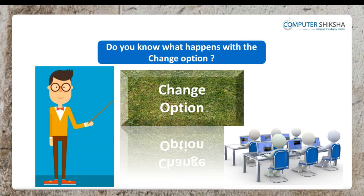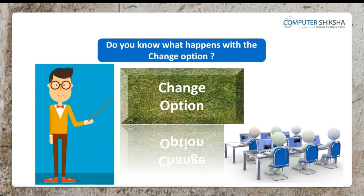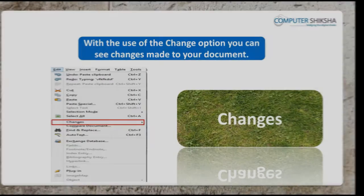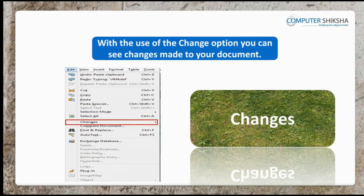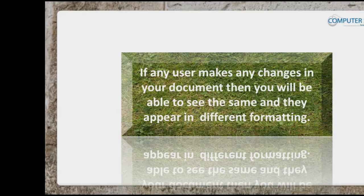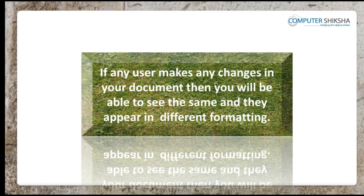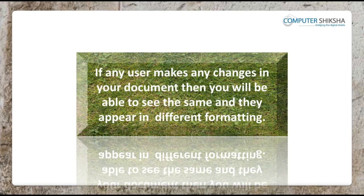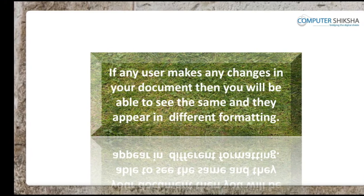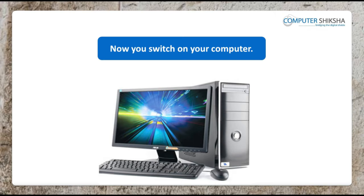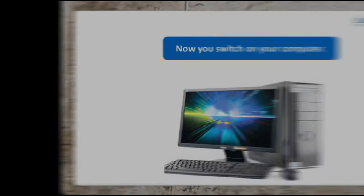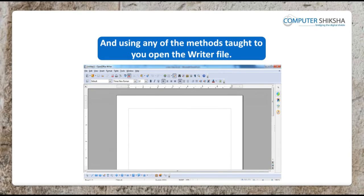Do you know what happens with the Change option? With the use of the Change option, you can see changes made to your document. If any user makes any changes in your document, then you will be able to see the same and they appear in different formatting. Now, all of you first switch on your computers and then open the Writer file.